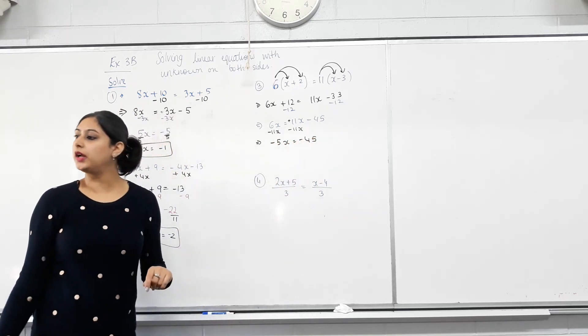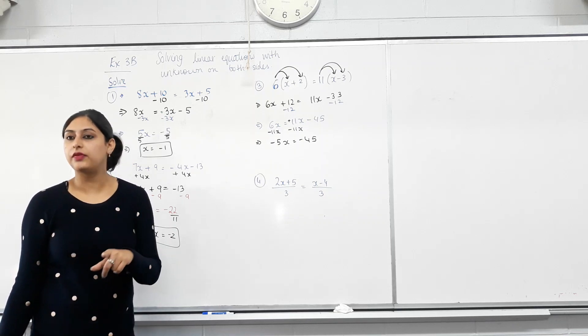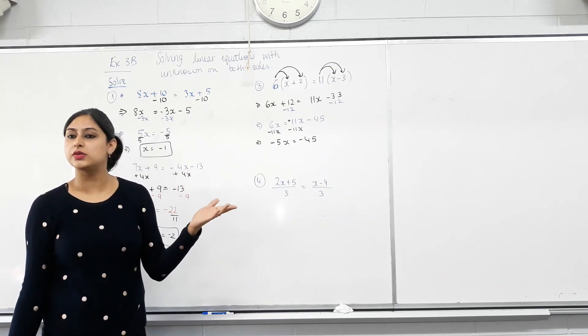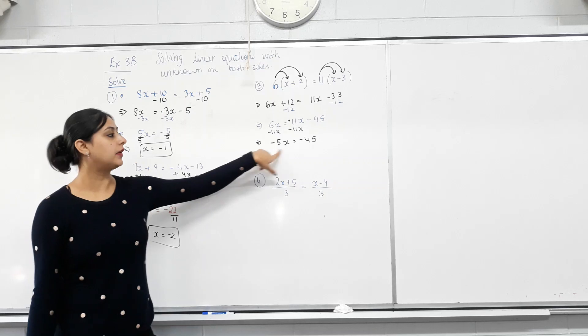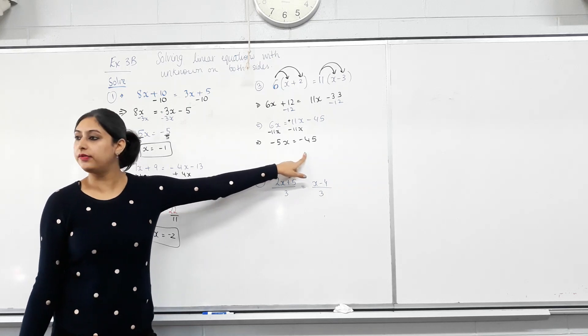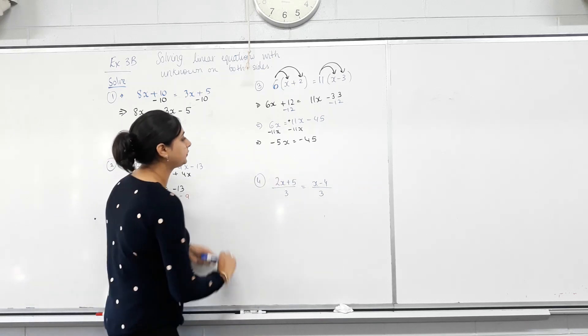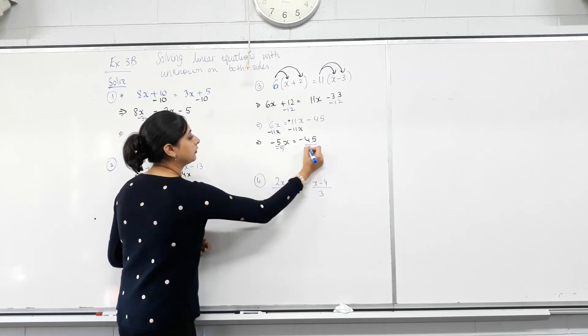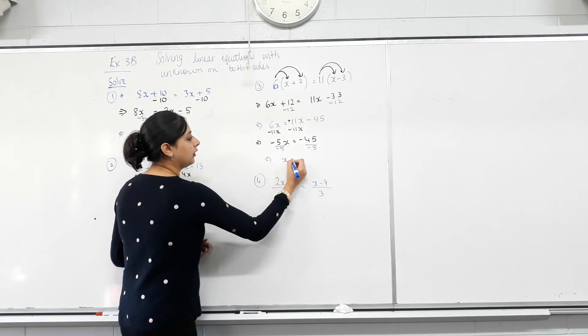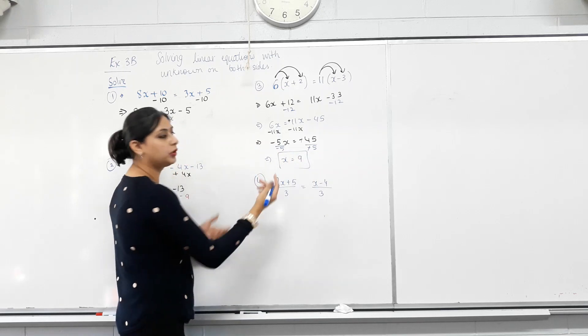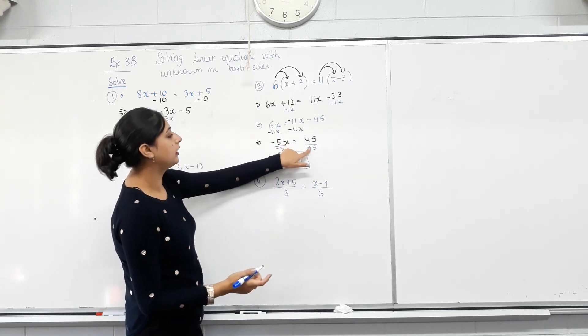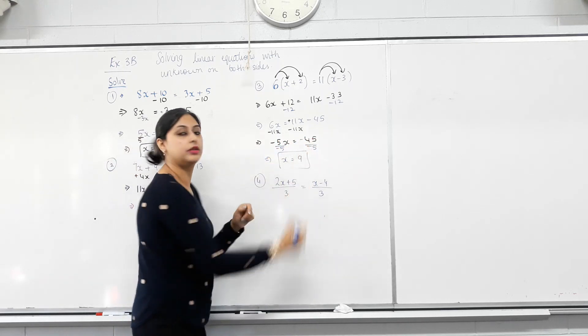Dividing both sides by? Negative 5. You can divide by 5 first and then by minus 1. But the quicker way would be dividing both sides by negative 5. Let's do that. X equals negative 21 over negative 5, which is 21 over 5. They don't really cancel out. It's a negative divided by a negative is a positive number.